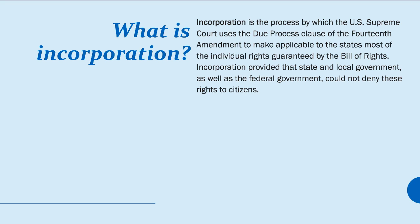By 1969, almost every provision of the Bill of Rights had been applied to state governments through the incorporation doctrine. The rights in the Bill of Rights, originally limited in scope to the federal government, were through the incorporation process actually extended to the states to be identified and enacted for citizens of each state.